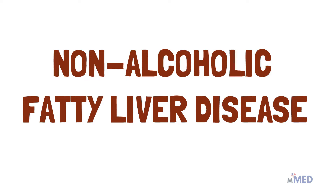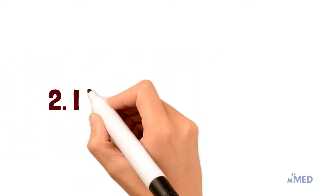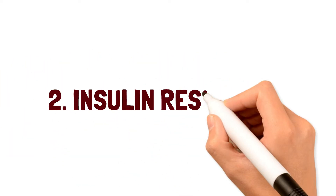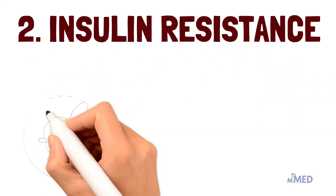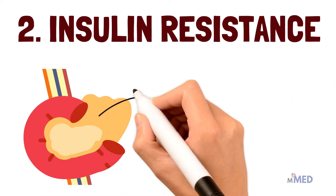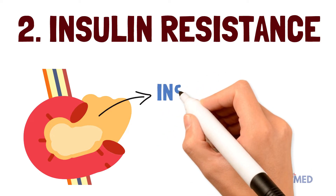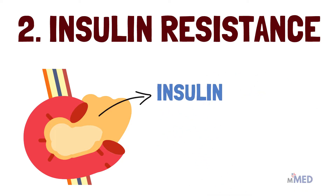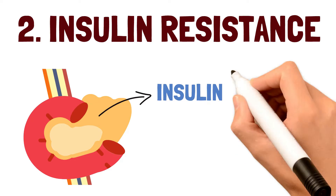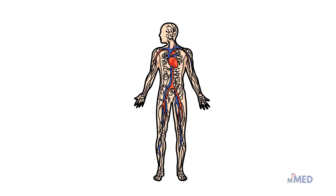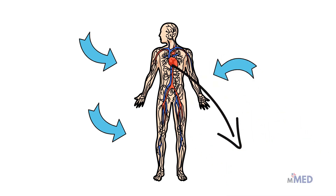Another main cause of fatty liver disease is insulin resistance. Insulin is the hormone which your pancreas makes which tells your body cells to take up excess blood sugar. In insulin resistance, the body cells are ignoring the insulin, so the pancreas has to produce higher levels of insulin. Insulin triggers fat storage throughout your body, including your liver cells, which can ultimately lead to fatty liver.